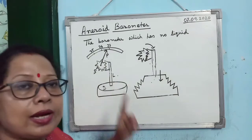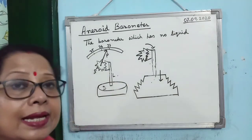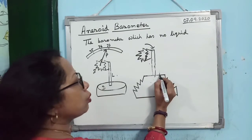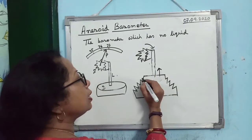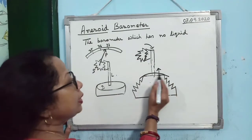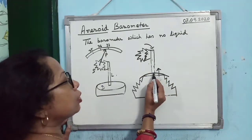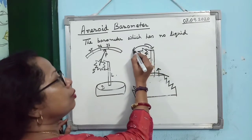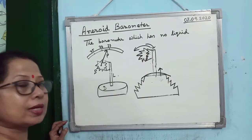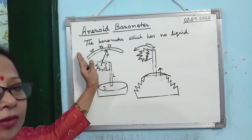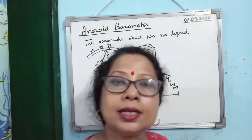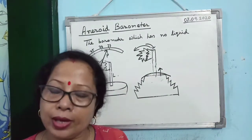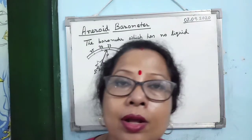If atmospheric pressure outside decreases, the inside pressure dominates, the diaphragm bulges out, the rod moves up, and the wheel rotates in the anticlockwise direction. The pointer moves towards the left, showing on the scale that atmospheric pressure is decreasing. This is how the aneroid barometer works.